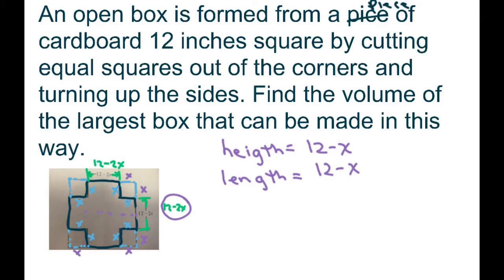And our volume is width, we could call it x, and then times height. Let x equal the width. So it's x times height times length, or we could write this as x times (12 minus 2x) squared.